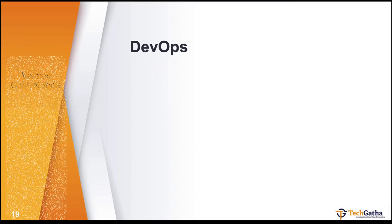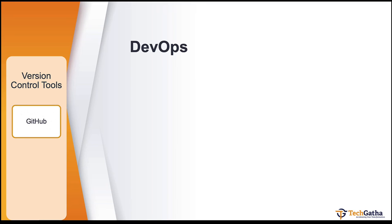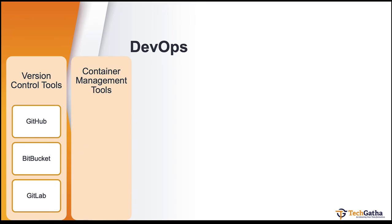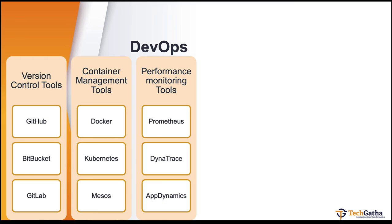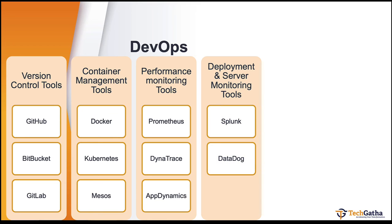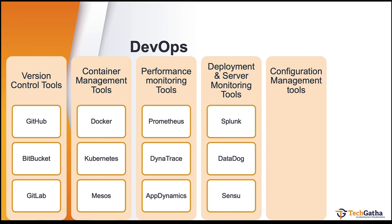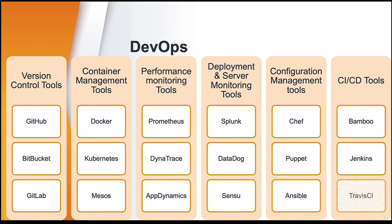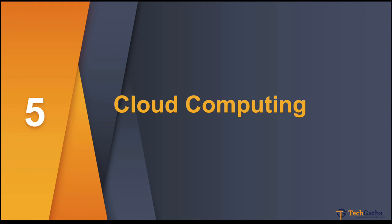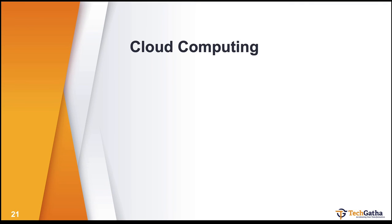DevOps tools include: version control tools like Git, GitHub, and Bitbucket; container management tools like Docker, Kubernetes, and Mesos; performance monitoring tools like Prometheus, Dynatrace, and AppDynamics; deployment and server monitoring tools like Splunk, Datadog, and Sensu; configuration management tools like Chef, Puppet, and Ansible; and CI/CD tools like Bamboo, Jenkins, and Travis CI.